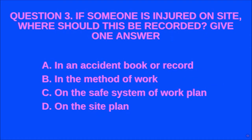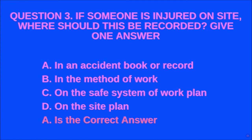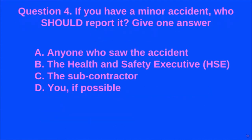Question 3: If someone is injured on site, where should this be recorded? Give one answer. A: in an accident book or record, B: in the method of work, C: on the safe system of work plan, D: on the site plan. A is the correct answer.